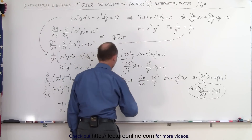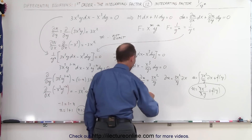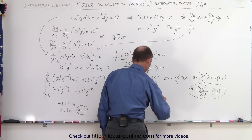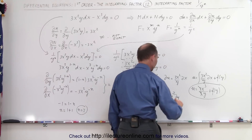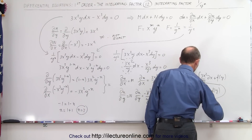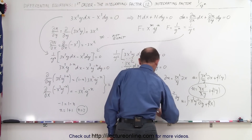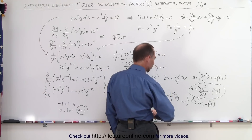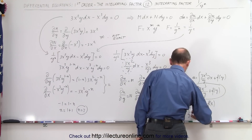We also set the partial of u with respect to y equal to N, which is minus x³ over y². Writing that as minus x³ y to the minus 2 and integrating with respect to y gives u equals minus x³ y to the minus 1 divided by minus 1, plus a function of x — which simplifies to x³ over y plus a function of x.